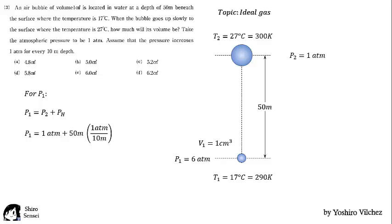Now, we use the combined gas law to find the final volume value, which calculating finally, we get 6.2 cubic centimeters. Alternative F. Next question.